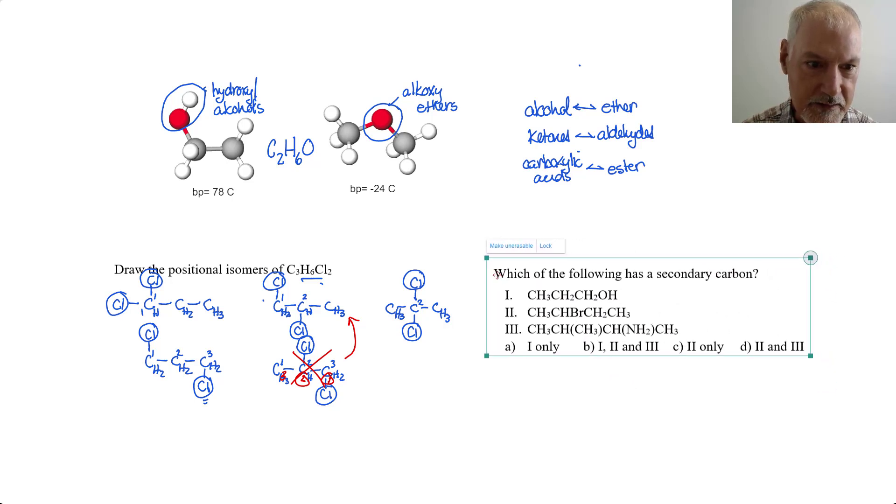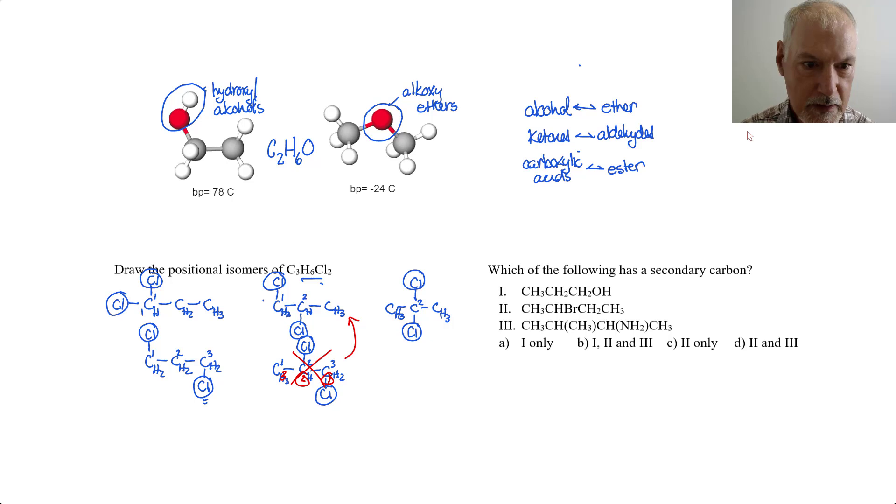And lastly, let's try this question. Which of the following has a secondary carbon? So, to be a secondary carbon, we need a functional group attached to a carbon. And that carbon would be attached to two other carbons to constitute a secondary one. Let's take a look at the structures of these compounds, starting with number one.